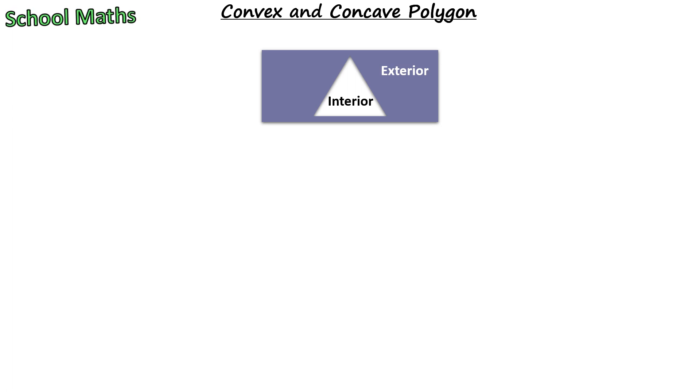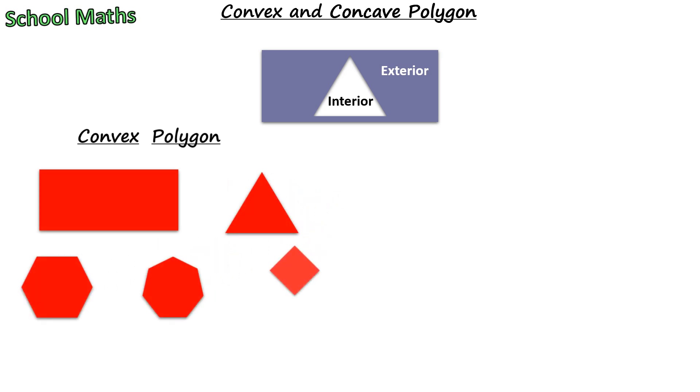Now, let us see some examples for convex polygons. The shapes are rectangle, triangle, hexagon, heptagon, and rhombus.